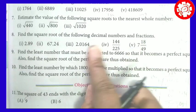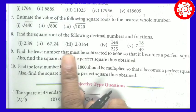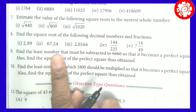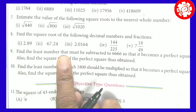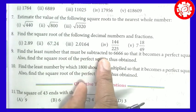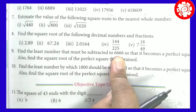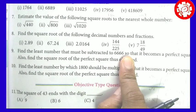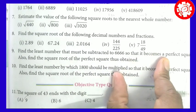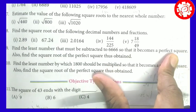Let us continue! This is the 9th one. Find the least number that must be subtracted from 6666 so that it becomes a perfect square.